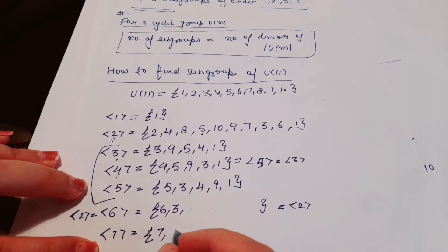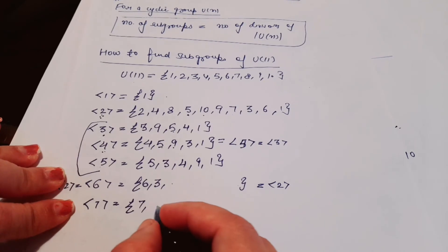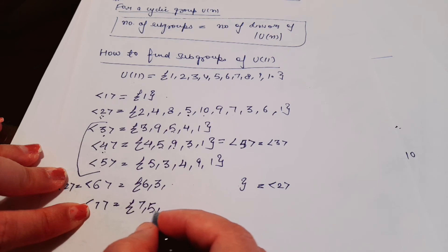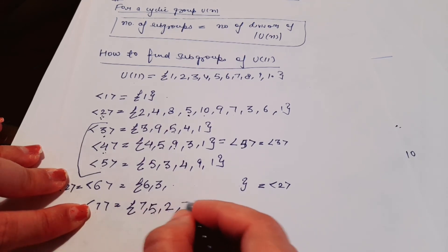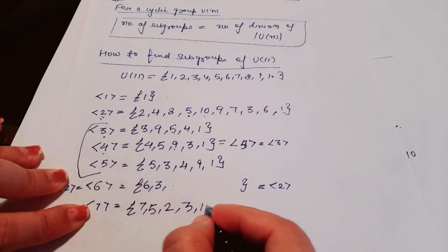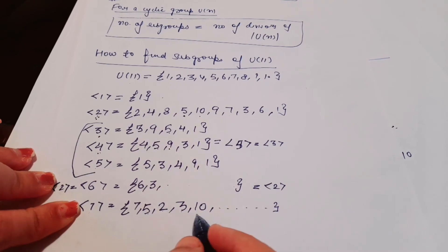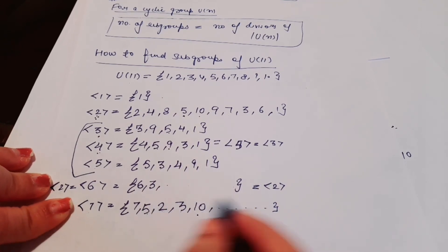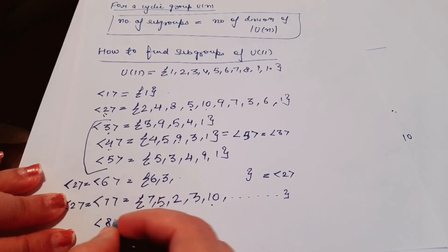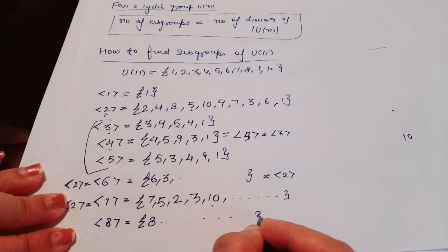For the subgroup generated by 7: 7^1 = 7, 7^2 = 49 → remainder 5, 7^3 = 5×7 = 35 → remainder 2, 7^4 = 2×7 = 14 → remainder 3, 7^5 = 3×7 = 21 → remainder 10. Since we didn't reach 1 at order 5, this goes to order 10, giving all elements. So ⟨7⟩ = ⟨2⟩ = ⟨6⟩. Similarly, ⟨8⟩ is also equal to ⟨2⟩.